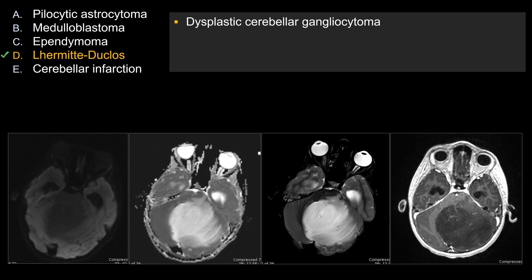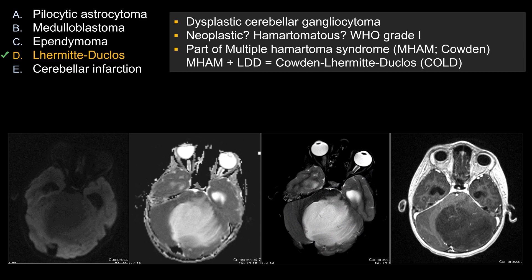On board exams, they can also ask you other questions about Lhermitte-Duclos. It is also referred to as dysplastic cerebellar gangliocytoma. It is not entirely clear whether this is truly neoplastic or is a hamartoma or malformation; nonetheless, it is currently classified as a WHO grade 1 neoplasm.